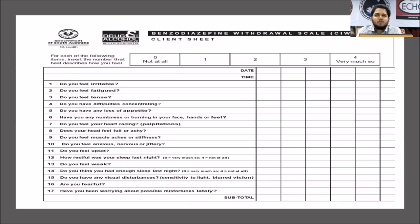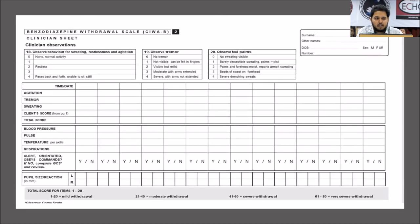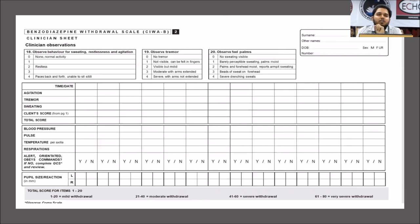The CIWA-B is a 20-item scale: 17 subjective items and 3 objective items based on clinical observation — specifically looking at behavior, sweating, restlessness, agitation, tremors, and signs of autonomic arousal. You also need to monitor blood pressure, pulse rate, respiration, temperature, pupils, consciousness, and orientation, as inadequately treated patients may progress to delirium.